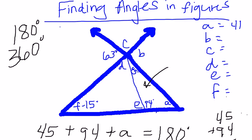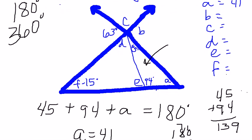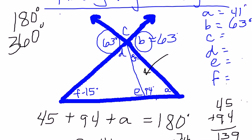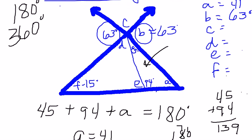Now let's find B. Vertical angles are equal in measure, so if this side is 63 degrees, then the vertical angle B is also 63 degrees.